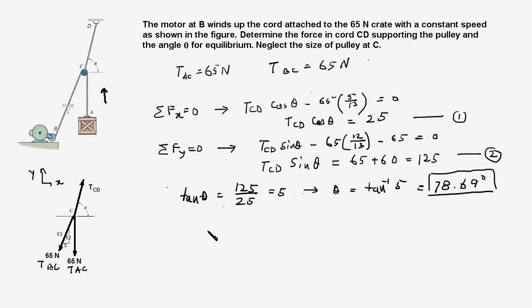From equation one, the tension in cord CD, TCD, equals 25 divided by cos of this angle. So 25 divided by cosine of 78.69 degrees, which equals 25 divided by 0.196. This equals 127.55 Newtons.